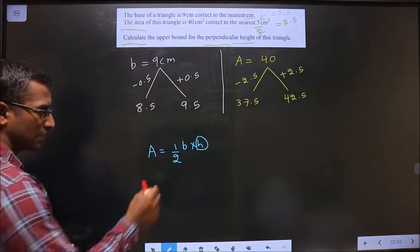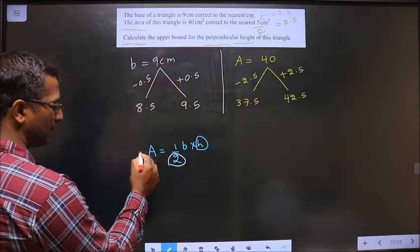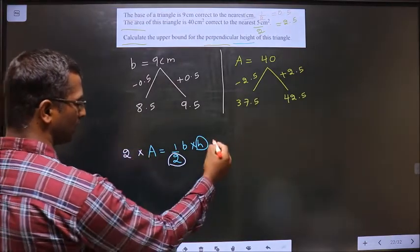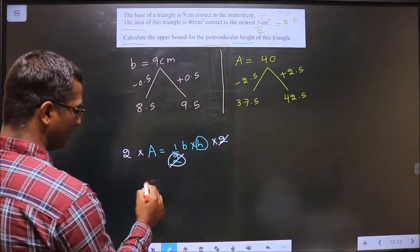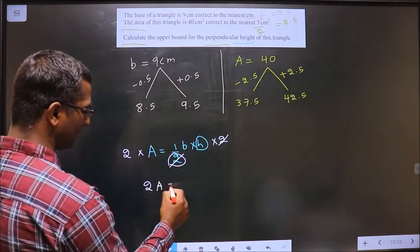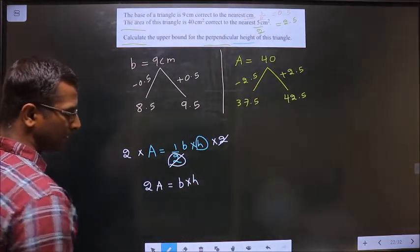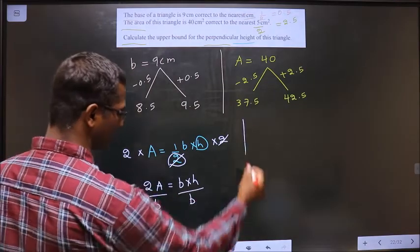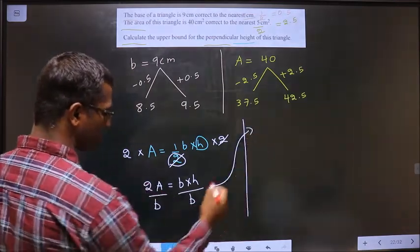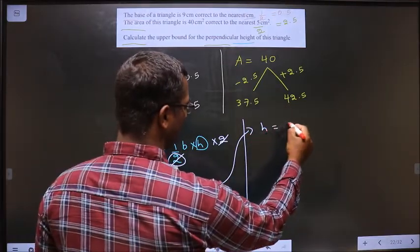How do you do that? Get rid of this 2. How can you get rid of this 2? By multiplying with 2 on both sides. So you are left with 2A equal to b into h. You need to make h the subject. So divide by b on both sides. So this gets cancelled. I get h equal to 2A by b.